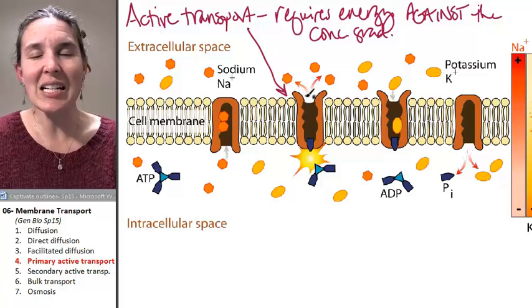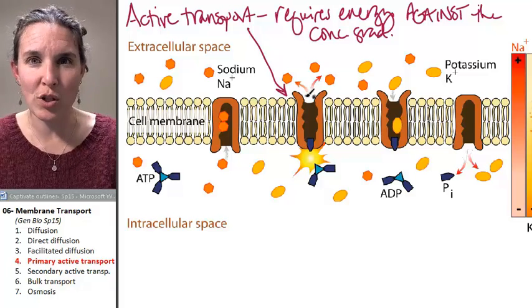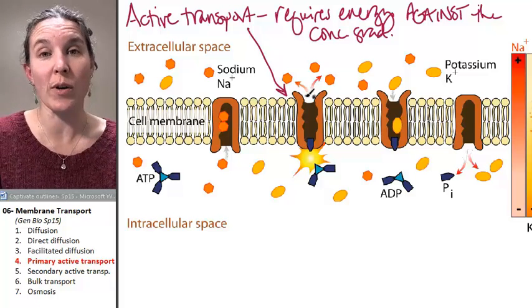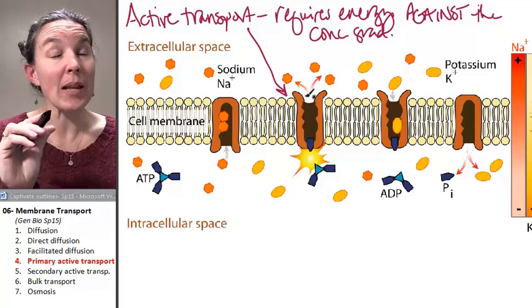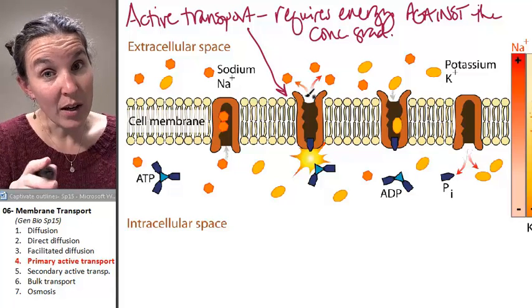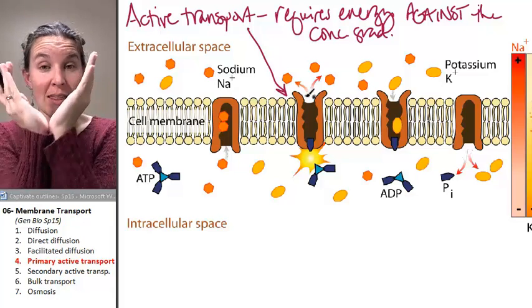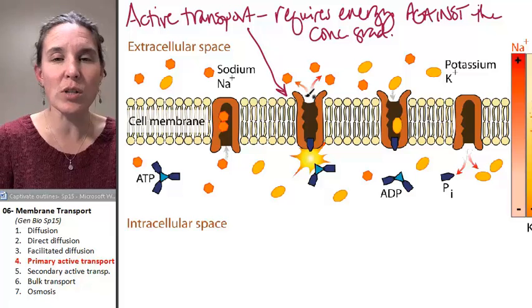A channel is never going to be able to do active transport because it doesn't do anything. Now, a transporter that opens to one side and then the other side can. So look at this.